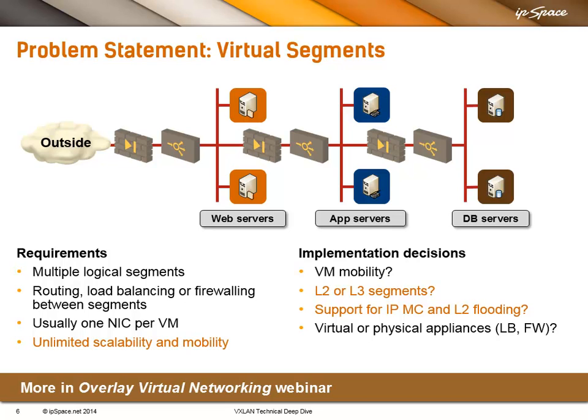Or maybe layer 3 connectivity, but let's not go there. Ideally a solution would provide layer 3 connectivity, load balancing, and firewalling both within a segment and between segments. And of course then we come to the requirements of unlimited mobility and scalability, which are obviously hard to do if we are limiting ourselves to certain technologies.